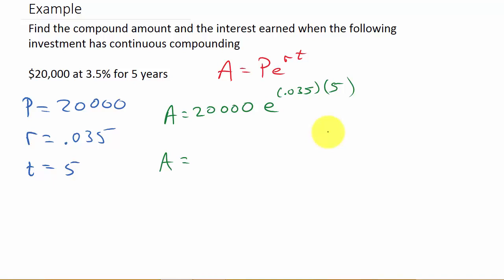Type in the 20,000, times. And then, that E, that's above the LN button. So, you'll have to hit your second or shift key. Hit second and then your LN button. And that E will pop up with a parenthesis beside it.